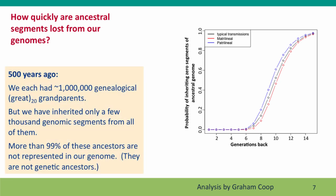We can do another calculation for about 20 generations ago — roughly 500 years ago. At that time, we would have had about a million genealogical ancestors. But we've only got a few thousand genomic segments in our entire genome, which tells us that more than 99% of these ancestors did not become genetic ancestors.